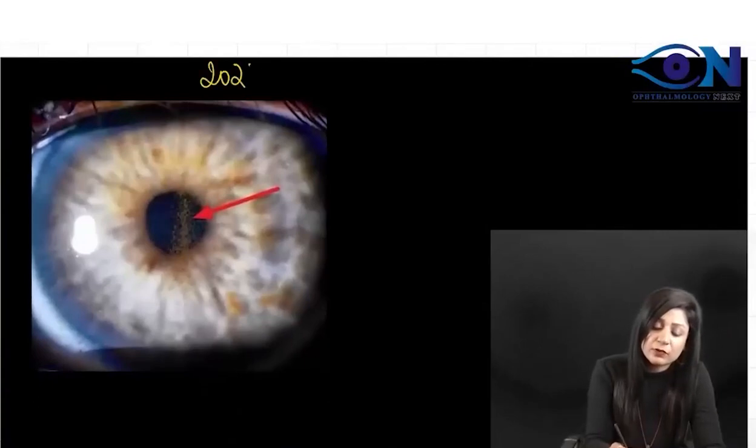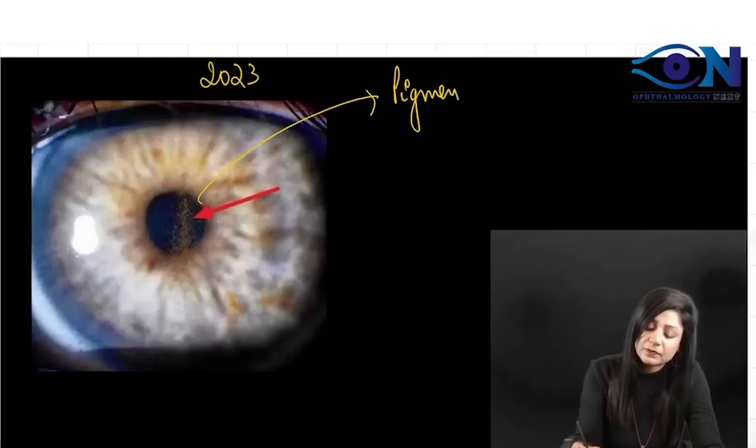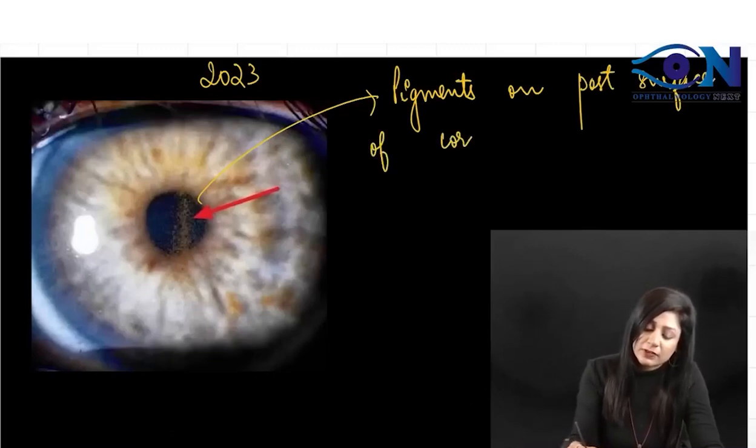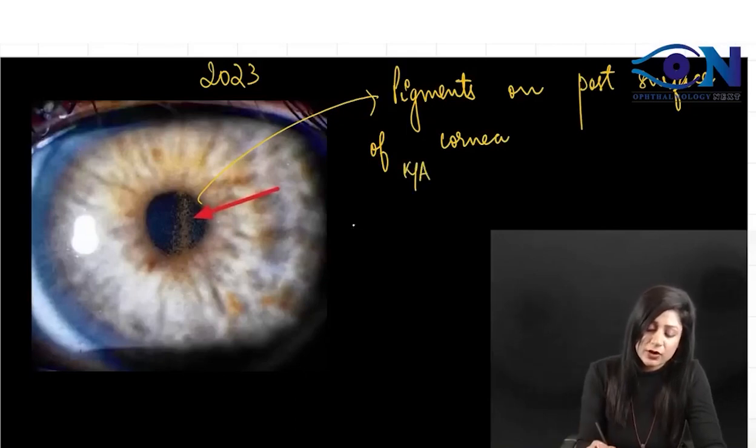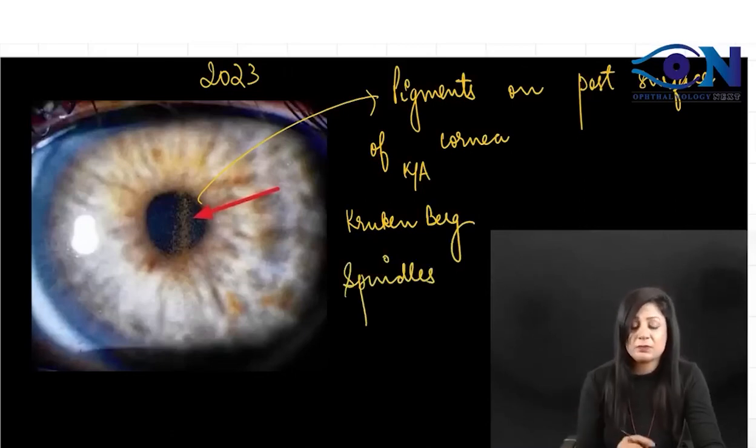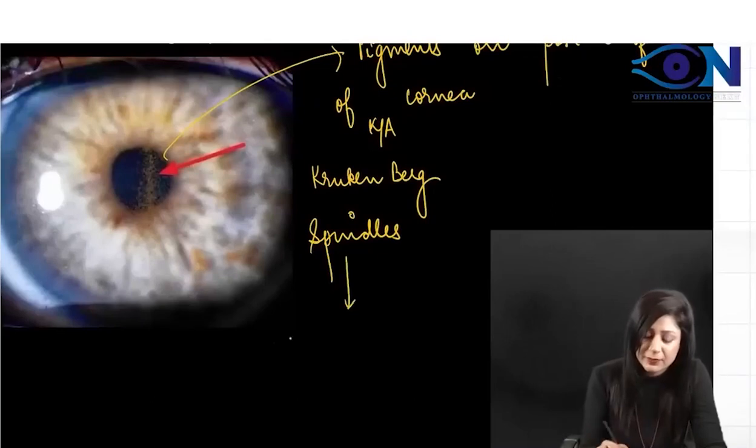Another thing important for 2023: here you can see the pigments on the posterior surface of the cornea. These are actually called Krukenberg spindles, which are very important.